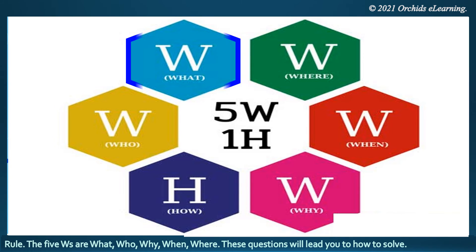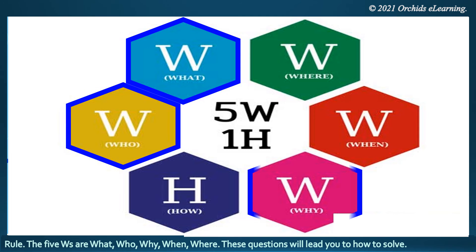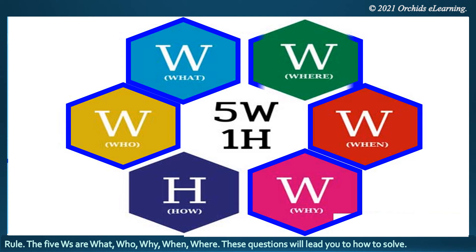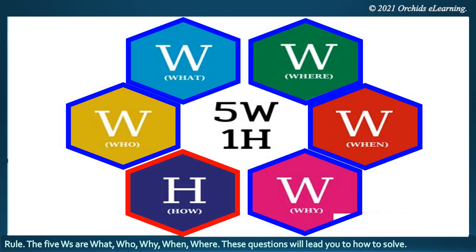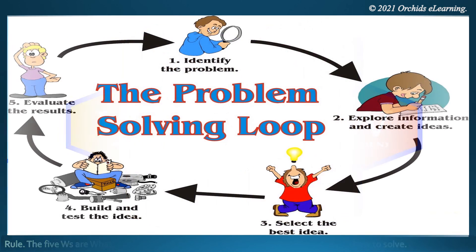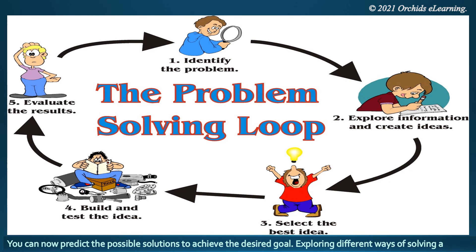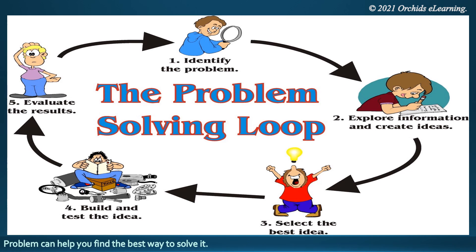The five W's are: What, Who, Why, When, and Where. These questions will lead you to How to solve the problem. You can now predict the possible solutions to achieve the desired goal. Exploring different ways of solving a problem can help you find the best way to solve it.